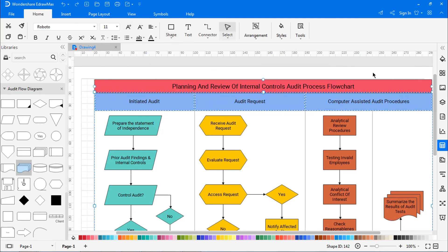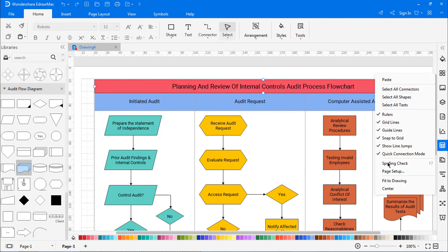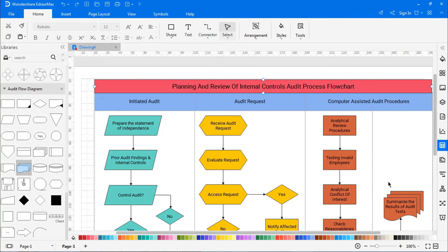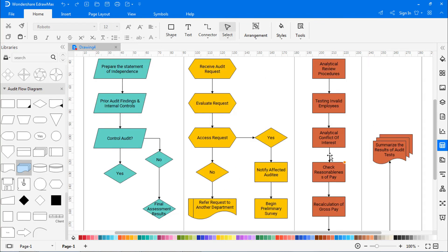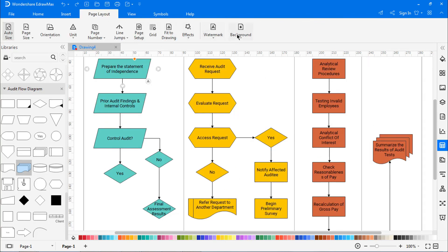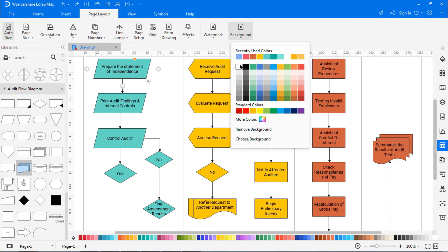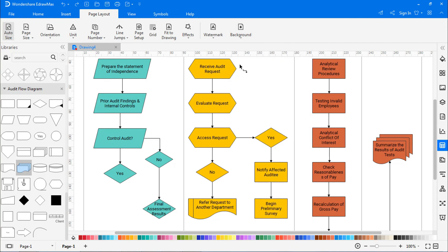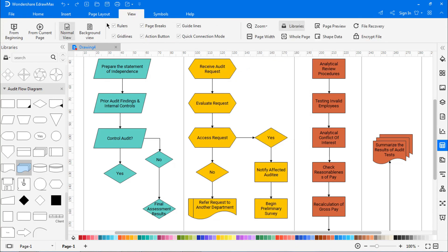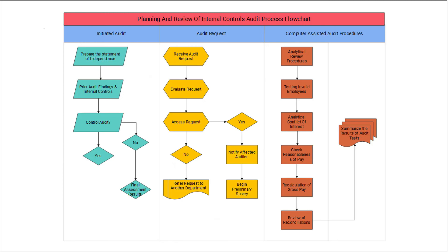Right-click and choose Fit to Drawing to fit the diagram on the drawing page. Navigate to Page Layout and choose the white color under Background. Go to the View tab, click on the From Current Page icon to view the diagram in a single frame.